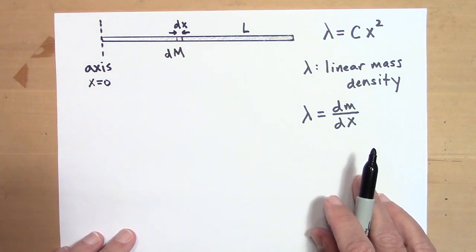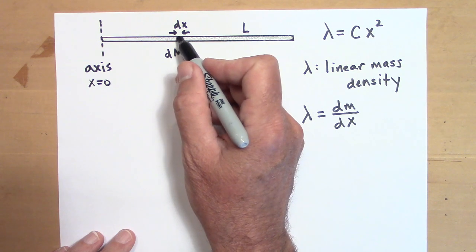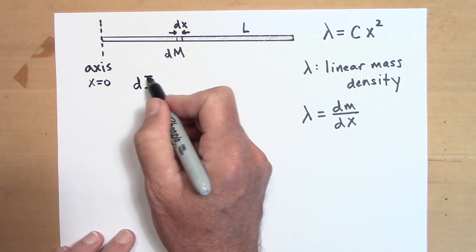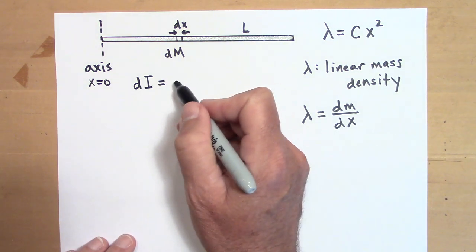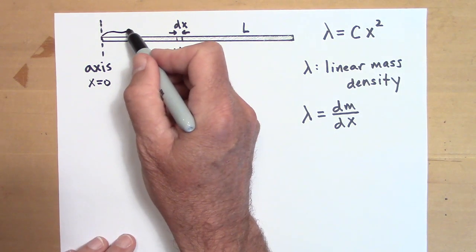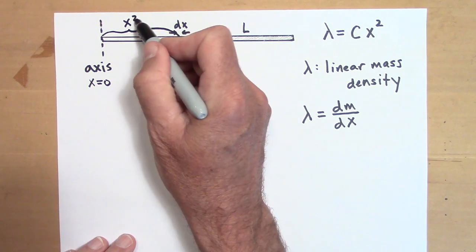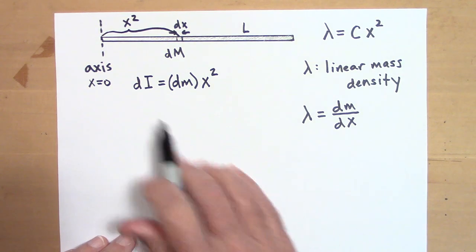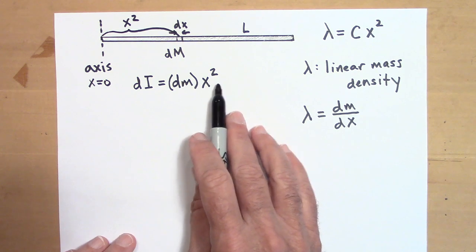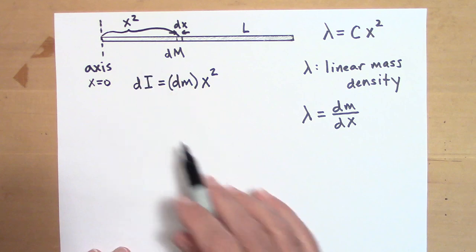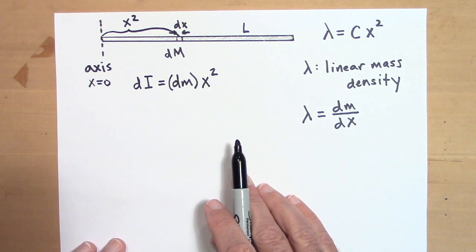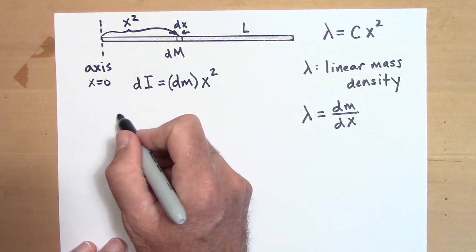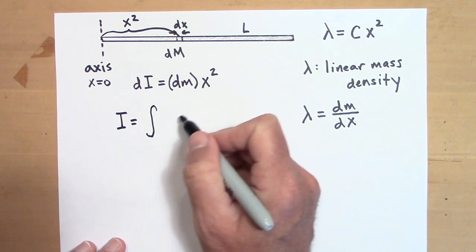The rotational inertia dI just from this little element dm is going to be dm times x squared — using the point mass equation I = mr², where the mass is dm and the distance from the axis is x. To get the rotational inertia for the entire rod, we sum up all these contributions, integrating dm times x squared over the whole length.